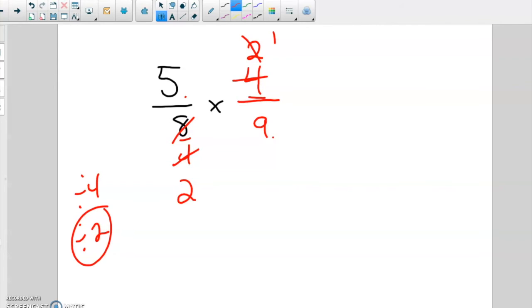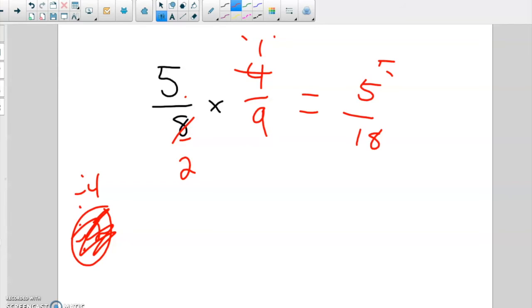And then you get multiply straight across five eighteenths. But again, we're going to work quicker. Divide by four right away. One, two, and we've got a five eighteenths.